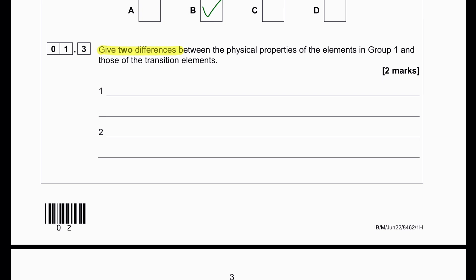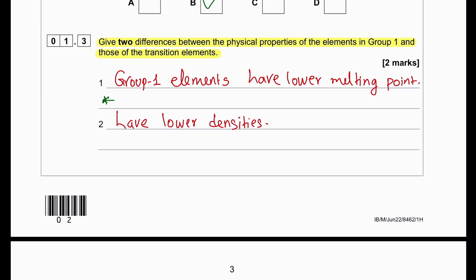Give two differences between physical properties of the elements in group 1 and those of transition elements. Group 1 elements have lower melting point, lower densities, and group 1 elements are less strong. They're soft metals. Or we can say group 1 elements are softer.